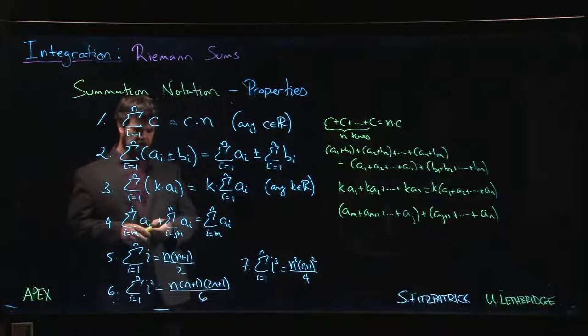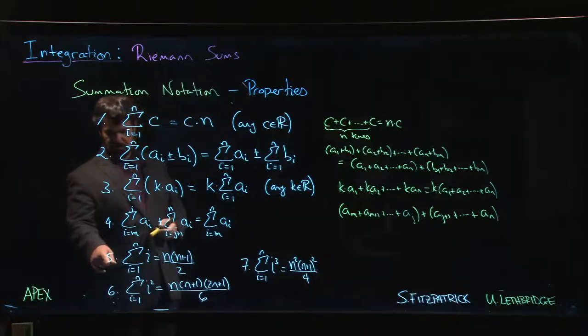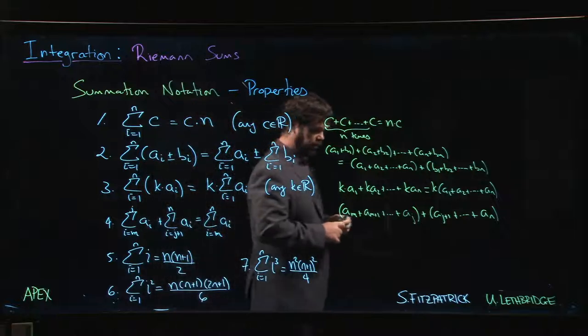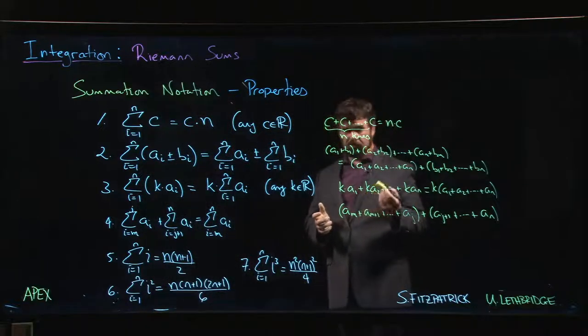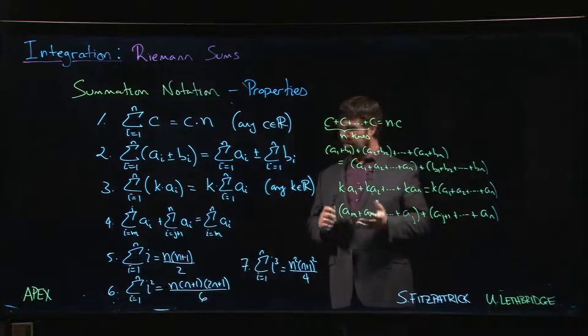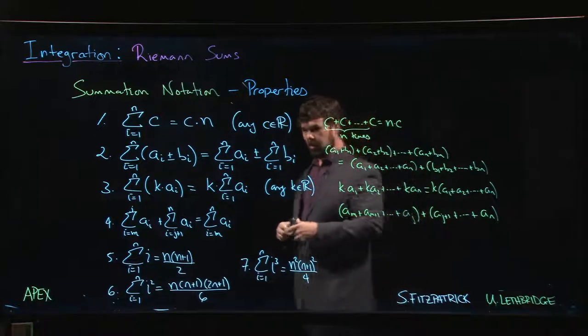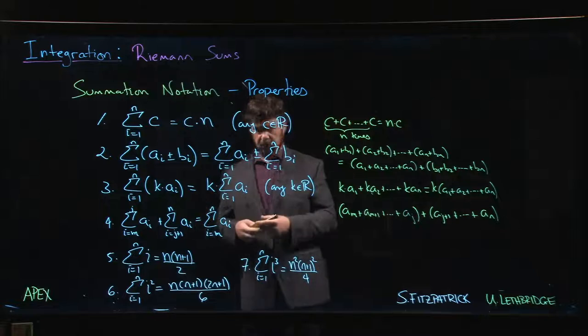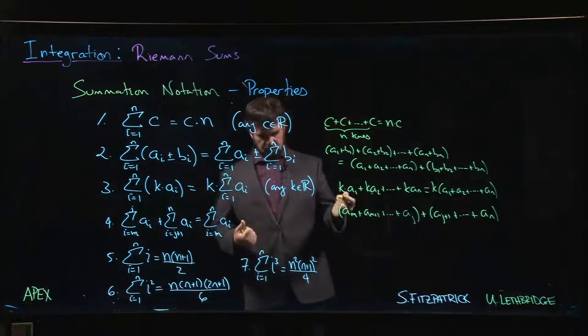This number five tells you how to add up the first n integers. There's a nice little formula here. There's one proof for this formula that's attributed to Carl Friedrich Gauss. They said that he did this when he was a little kid. His teacher tried to keep him busy, told him to go add up the numbers one through a thousand or something like that.